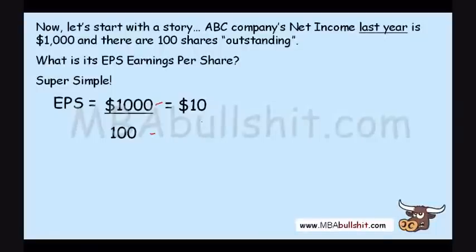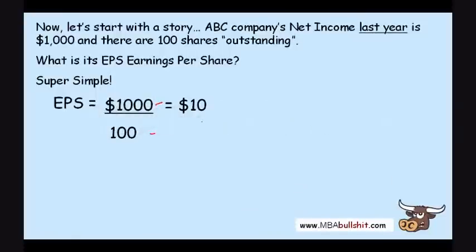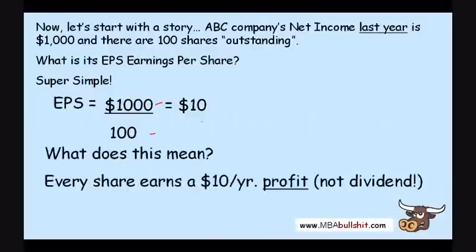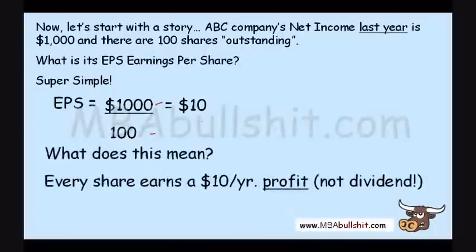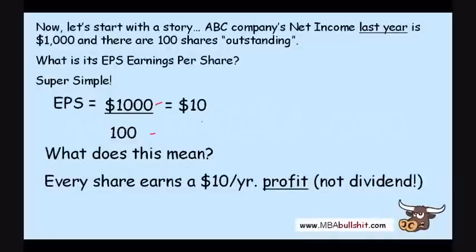This is the most easy part of financial ratios — computing the actual number. What's more important is what does this mean? It means that every share earns $10 a year in profit — last year, every share earned $10 in profit. You take the whole profit of the company and divide it by the total number of shares, and assuming each shareholder owns only one share, every shareholder gets $10 a year in profit.